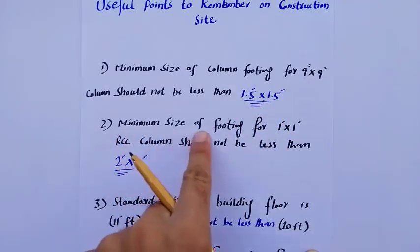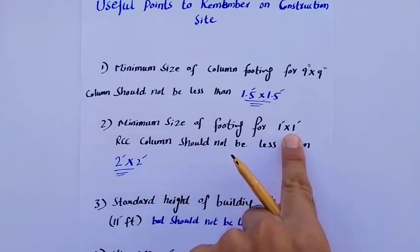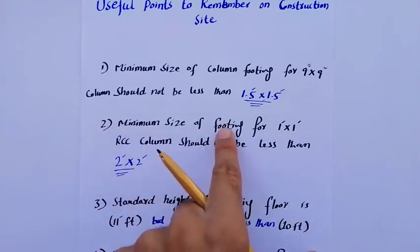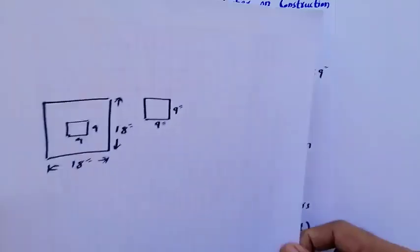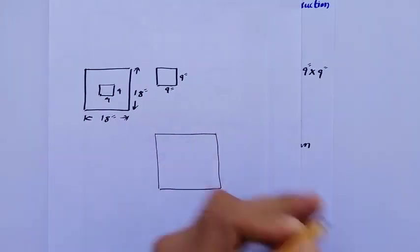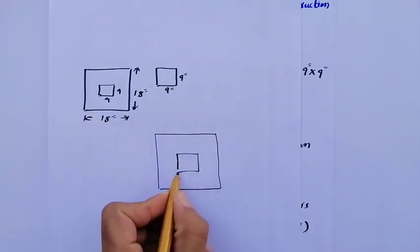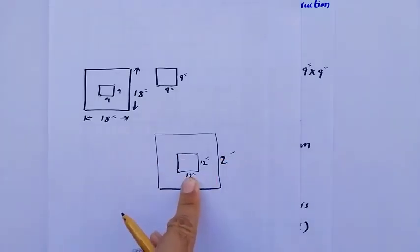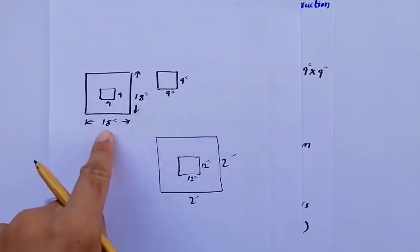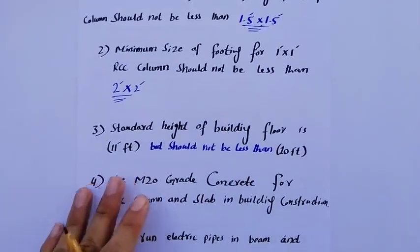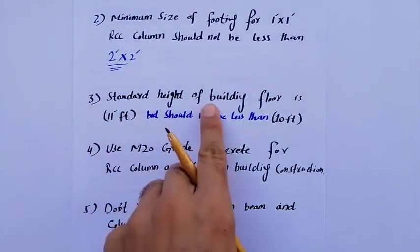Second point: the minimum size of footing for a 12 by 12 inch (one foot by one foot) RCC column should not be less than 2 by 2 feet. So if the column size is 12 inches, the footing size should not be less than 2 feet by 2 feet. And for a 9 by 9 inch column it should not be less than 18 inches by 18 inches.